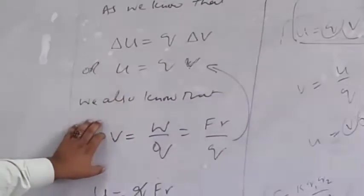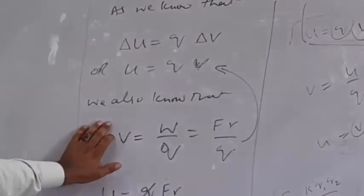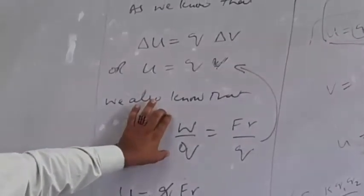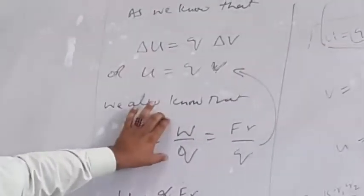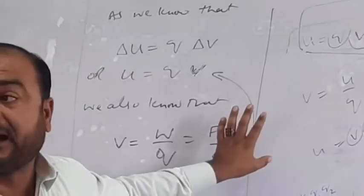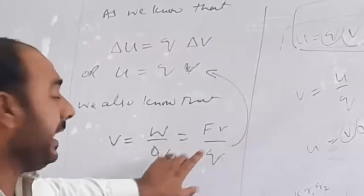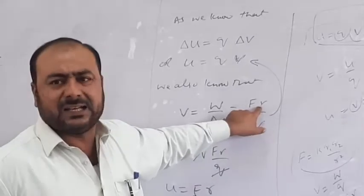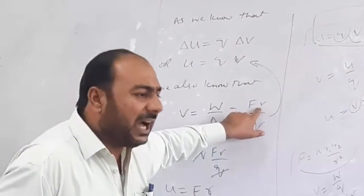Work is F dot d. V equals work divided by charge, which is F·R divided by Q.